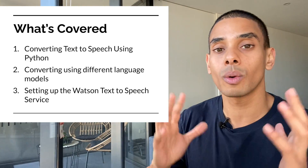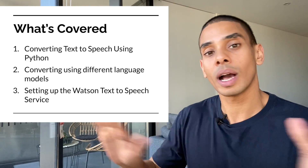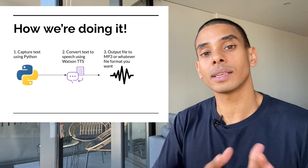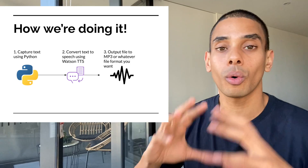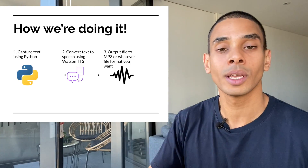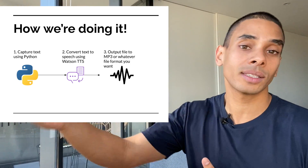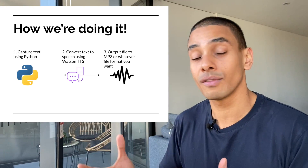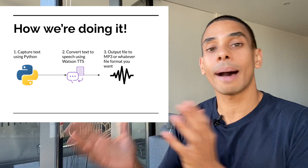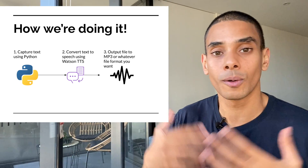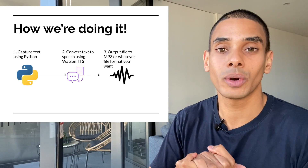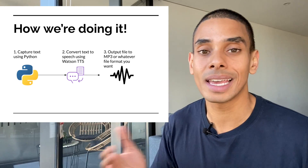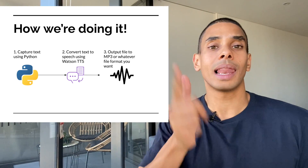We'll also cover all the setup that you need to go through. We're going to be using Watson text to speech, so we'll cover all of that as well. In terms of how we're going to be doing it, we're going to be working inside of a Jupyter notebook. We'll capture all of our content or our corpus using Python, then send that text to the Watson text to speech service to perform the conversion, and output that as an MP3 audio file.